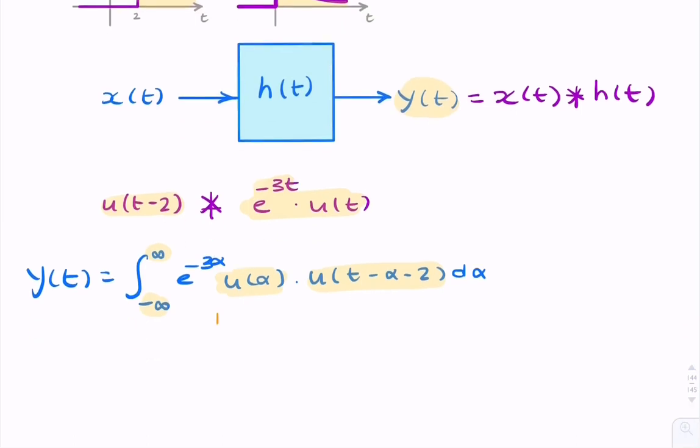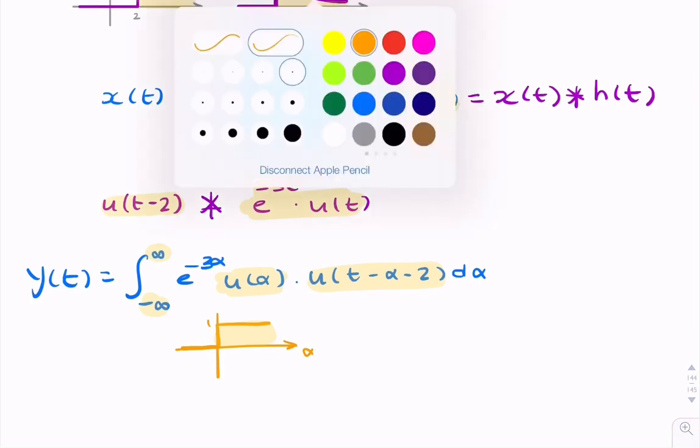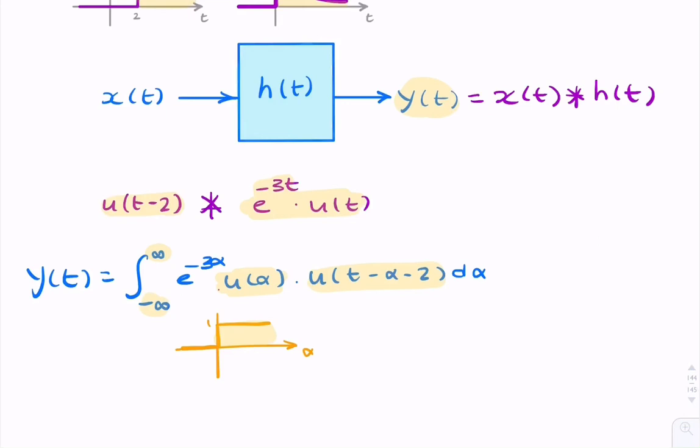So u(α), if we have an axis of α, u(α) just looks like that. It's only positive, or it's only non-zero for positive α. So for α greater than zero, it's non-zero. For α less than zero, it's zero.